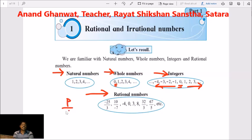That is every number written in the form P upon Q, where P and Q are integers. P and Q are integers. And Q does not equal to 0.